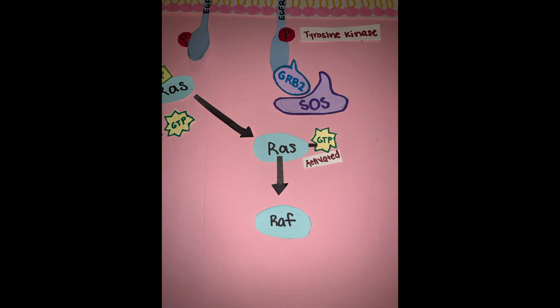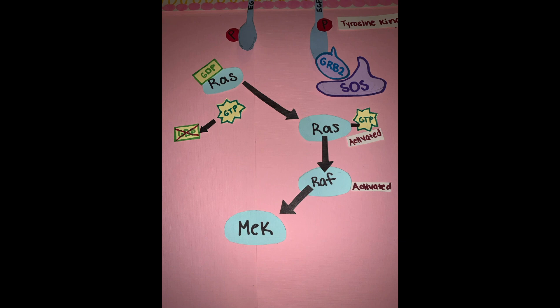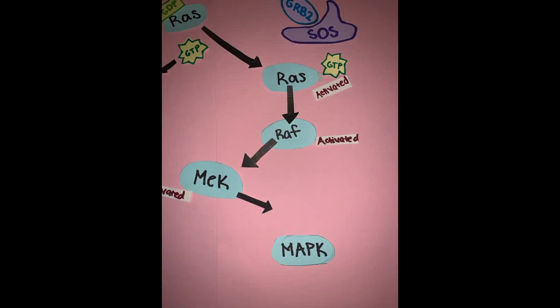Once RAS is bonded with GTP, RAS is activated and activates another protein called RAF. Once RAF is activated, it will activate another protein named MEK. Finally, MEK will activate another protein called MAP kinase.